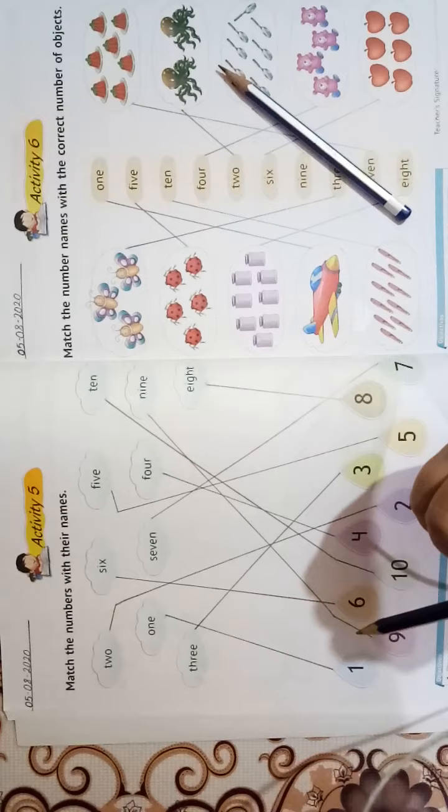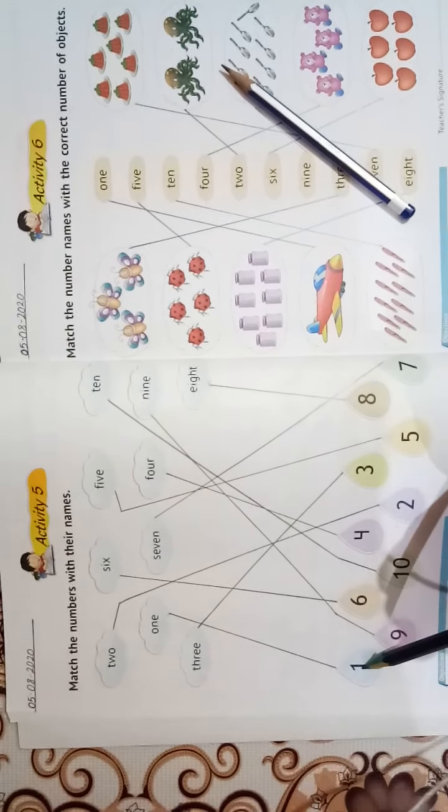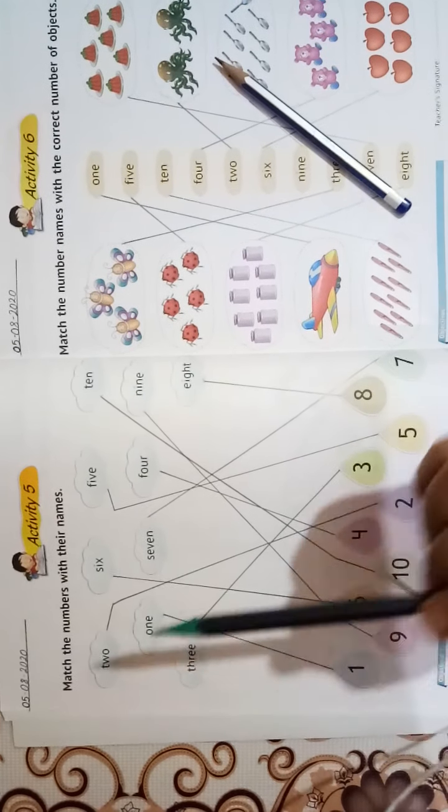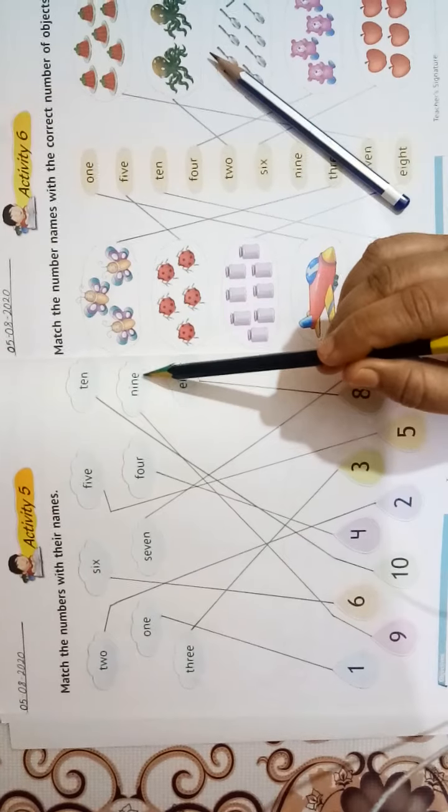Now, as we have done in our notebook just now, same way we have to do this. Number 1, we will match with O-N-E 1. Number 9 with number name N-I-N-E 9.